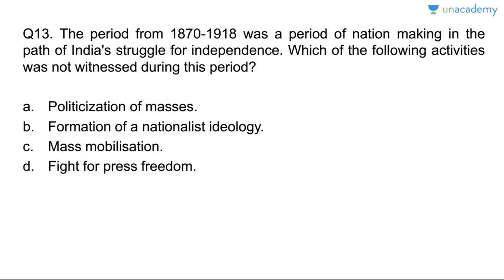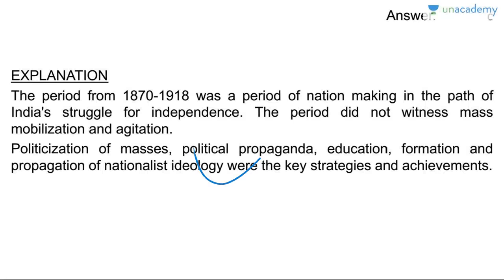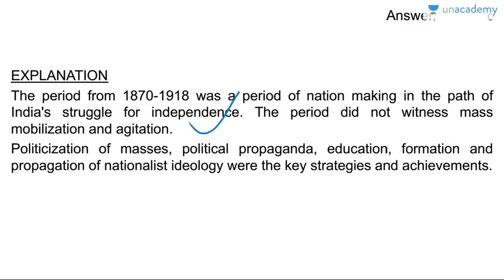Question twelve: activities witnessed during the period 1870–1918. Policy on masses — yes. Formation of a nationalist ideology — yes. Fight for press freedom — yes. But mass mobilization did not happen until 1918. Answer is C. The period 1870–1918 was a period of nation-making in India's freedom struggle. Political propaganda, education, formation and propagation of nationalist ideologies were the key strategies.